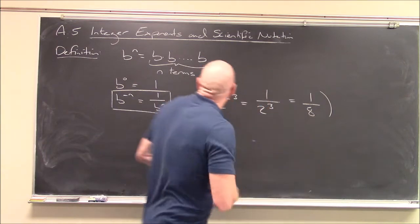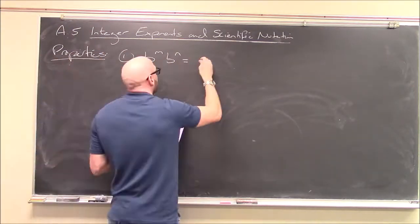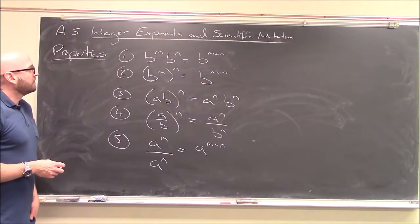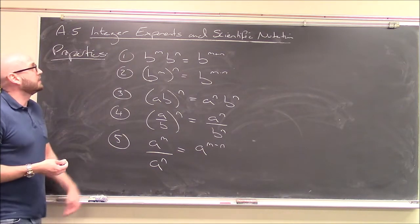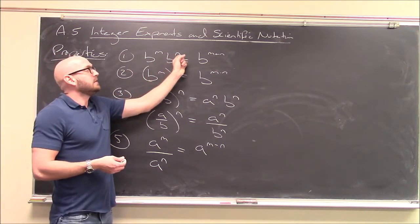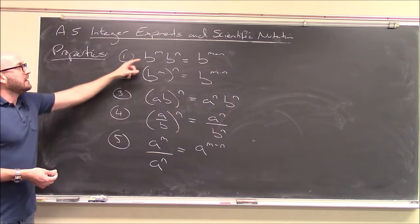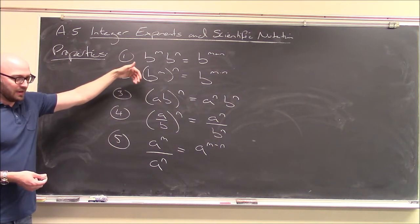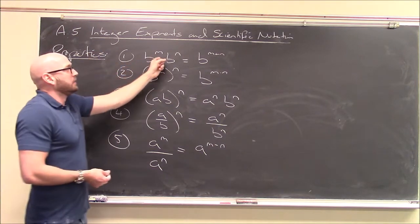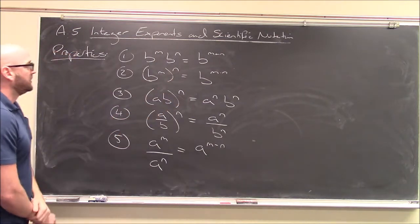And there's several important properties here we need to discuss. And here's our properties. Number 1 we've already talked about before. If I've got b to the m times b to the n, well, the way you handle that is you just add the exponents together. I'm pointing it out again that even though we had that for natural numbers, for natural exponents, this is true now for even all integers. So now if we have negative exponents as well, this property still holds.